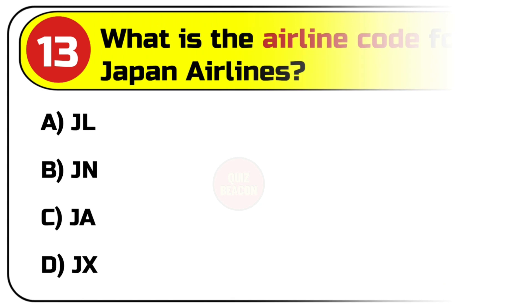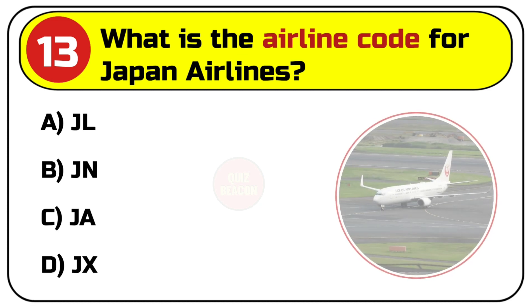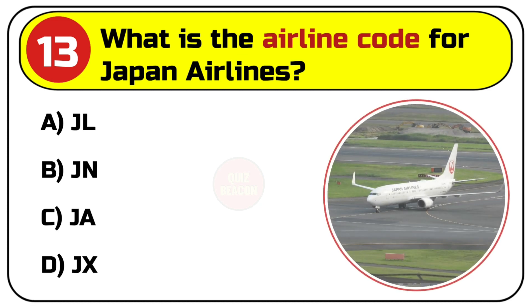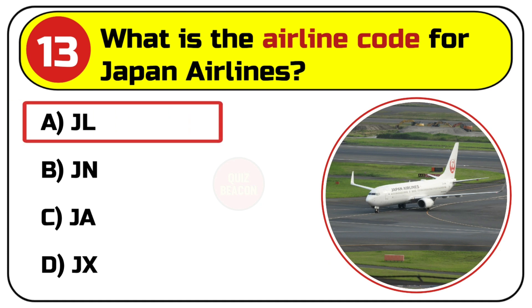Question number thirteen: what is the airline code for Japan Airlines? Options are A. JL, B. JN, C. JA, D. JX. Correct answer is A. JL.